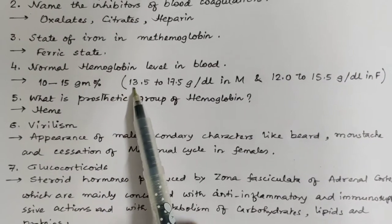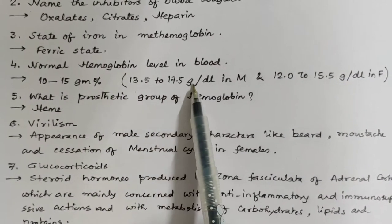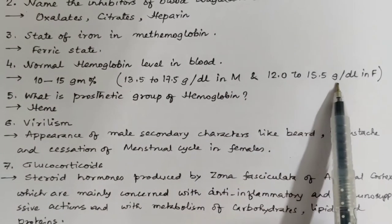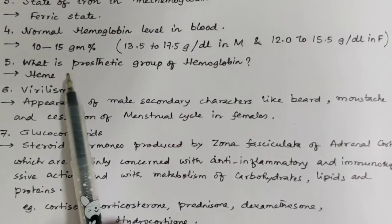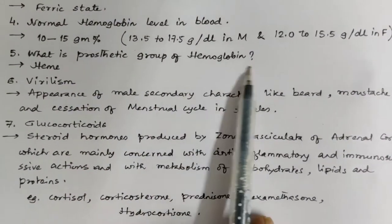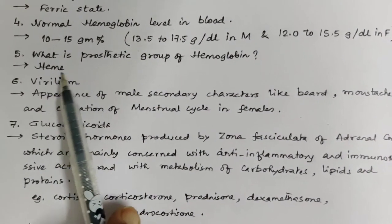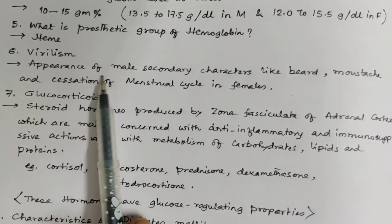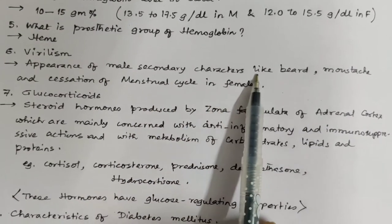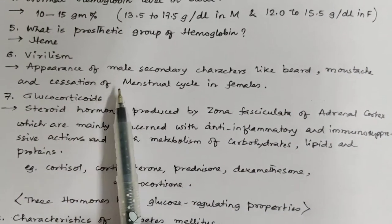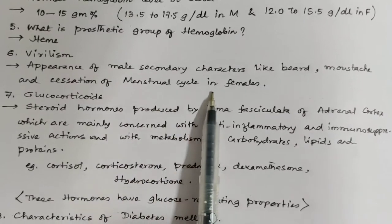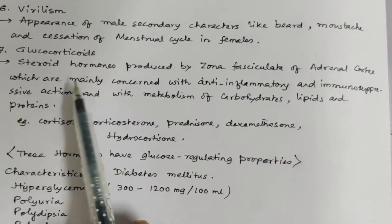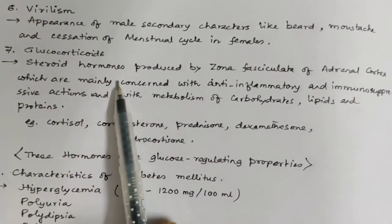What is the prosthetic group of hemoglobin? Again, it is heme. What do you mean by virilism? Virilism means the appearance of male secondary sexual characters like beard, mustache, and cessation of the menstrual cycle in females. What are glucocorticoids? Glucocorticoids are steroid hormones produced by the zona fasciculata of the adrenal cortex.